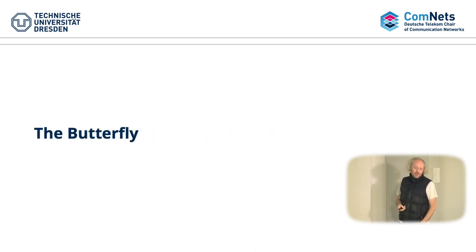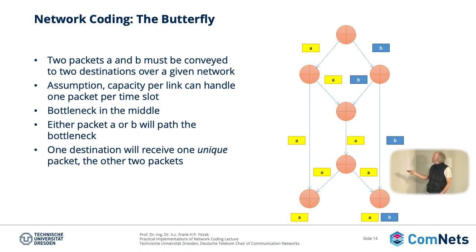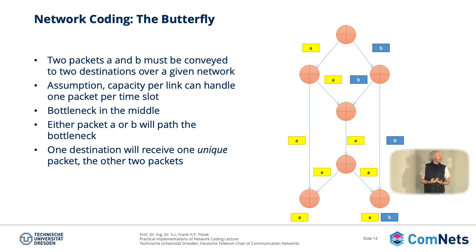The first example used with network coding is always the butterfly. In the butterfly, there's a given topology: you have at the top one communication node which is a source, and at the bottom two receivers. The other intermediate nodes are connected via one link, and each link can carry one packet. You have a source sending out two packets A and B, and both destinations would like to get both packets. So how is this possible?